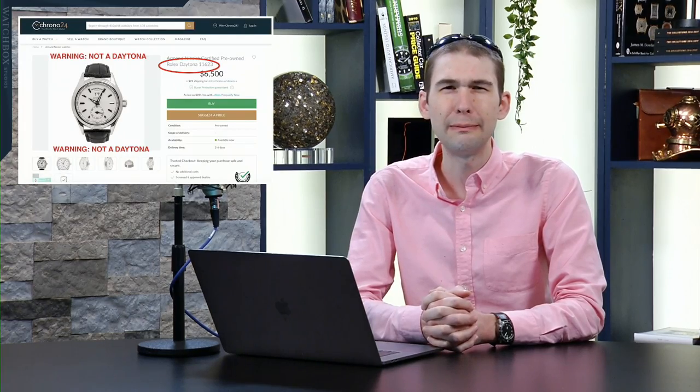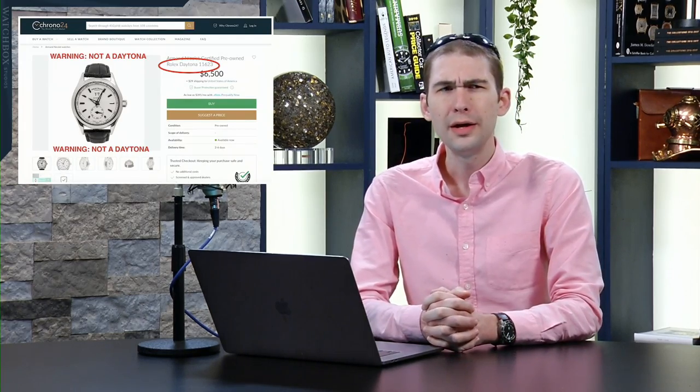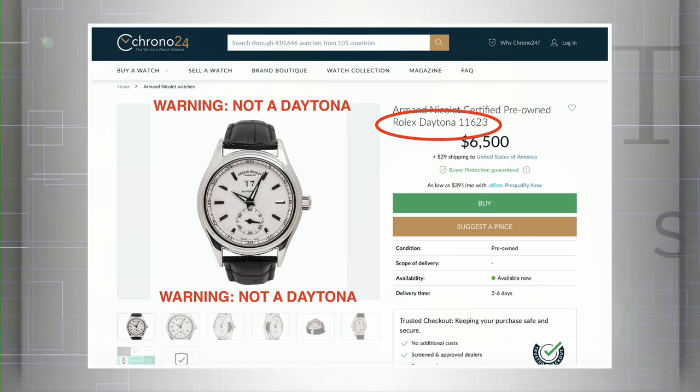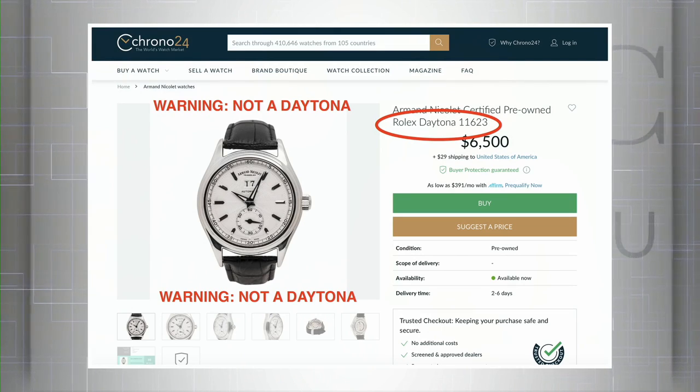Fortunately, we can always count on Chrono 24 to sort the worst listings from the web and protect us from these kind of sketchiest sellers, right? Well, Chrono will protect us. Oh, you gotta be kidding me. Chrono. It's the same guy and it's the same fake Rolex Daytona 116523.